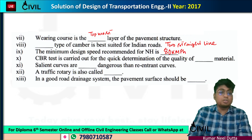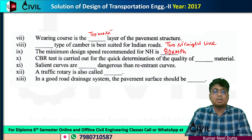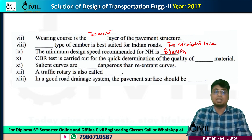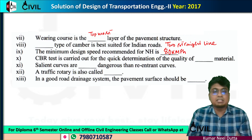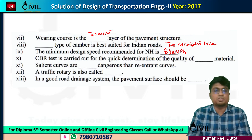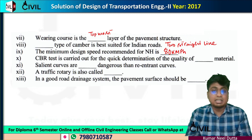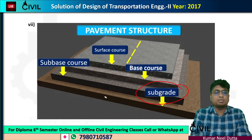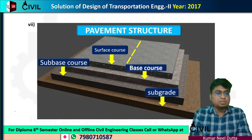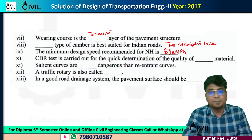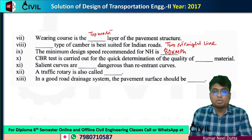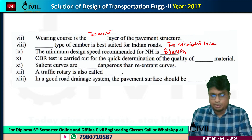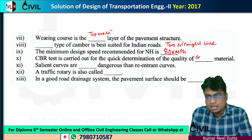Number ten: CBR test is carried out for the quick determination of the quality of subgrade material. The subgrade generally uses normal soil, and the CBR test assesses its quality.